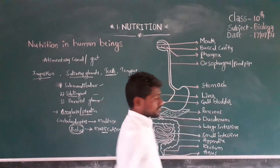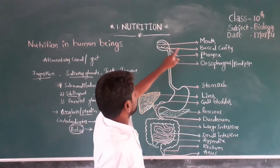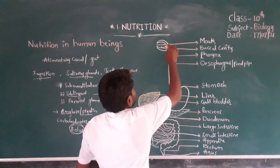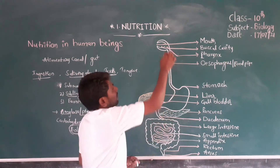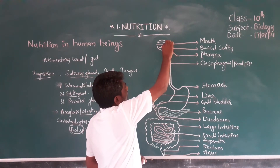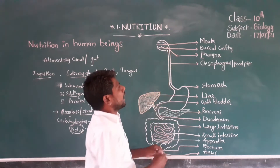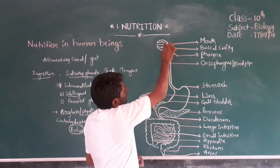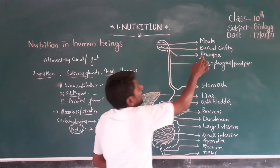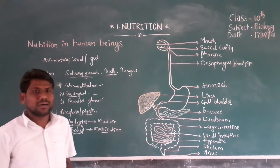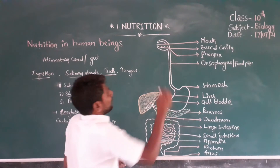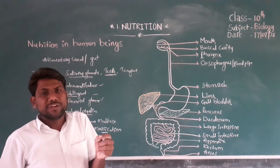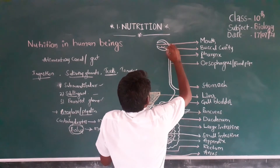Next, the pharynx. The pharynx is the posterior part of the buccal cavity. Food passes from the buccal cavity through the pharynx. Here there is a small flap called the epiglottis, which prevents the entry of food particles into the windpipe.